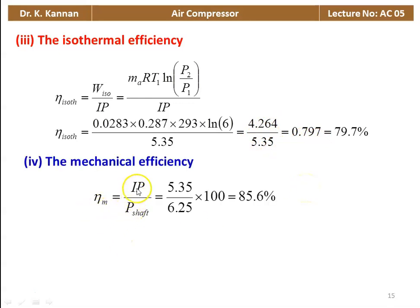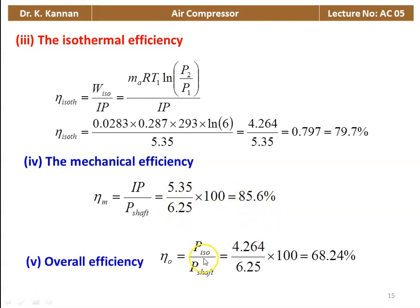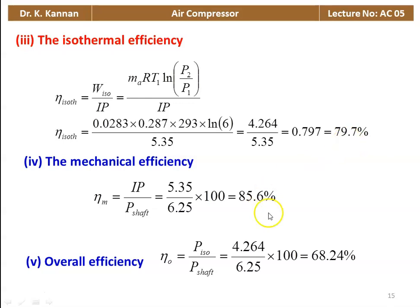Mechanical efficiency = indicated power / shaft power = 5.35 / 6.25 × 100 = 85.6%. Overall efficiency = isothermal power / shaft power = 4.264 / 6.25 × 100 = 68.24%. The overall efficiency can also be calculated as the product of isothermal efficiency and mechanical efficiency.